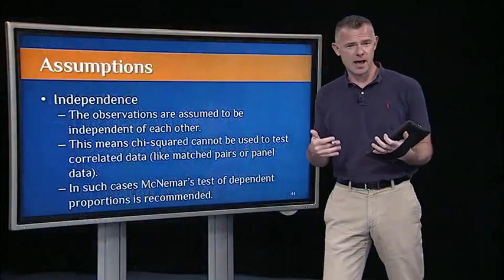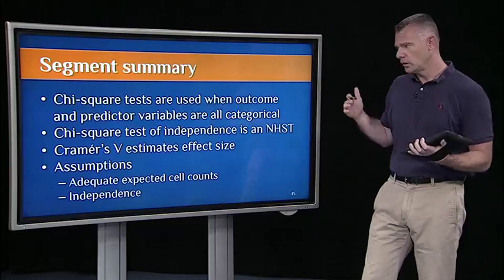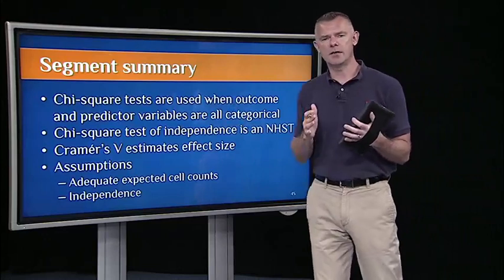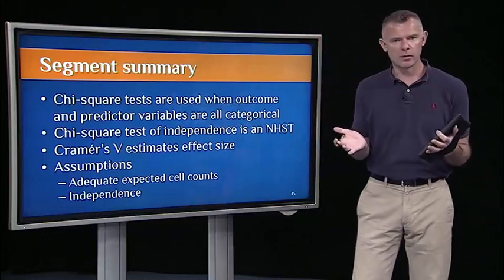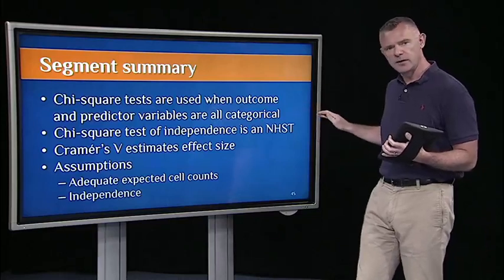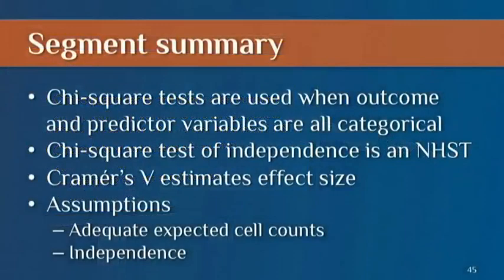The other assumption is independence — the voters observed in one category have no influence over voters observed in other categories. Chi-square can't be used to test correlated data, such as matched pairs or panel data. In such cases, we use McNemar's test of dependent proportions, which is also a non-parametric test we'll cover next week. To wrap up: chi-square tests are used with categorical data — categorical predictors and categorical outcomes. The chi-square test of independence is a null hypothesis significance test, so we follow it up with an estimate of effect size using Cramer's V. The test has two assumptions: adequate expected cell counts, and independence.